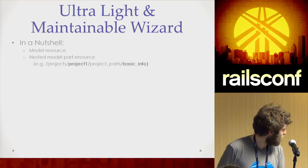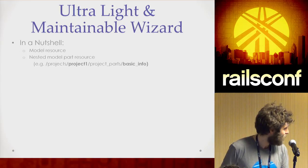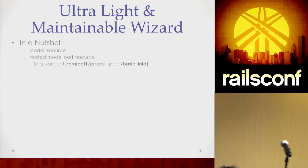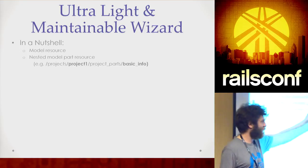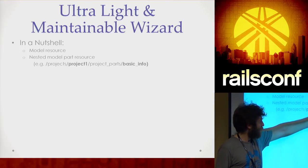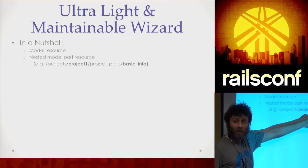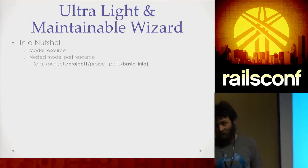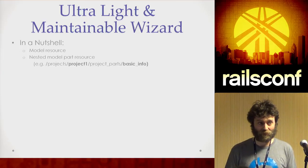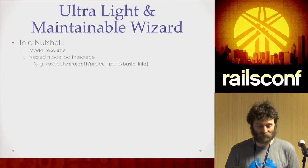You end up with URLs that are very RESTful — projects with the ID, then project parts, then the name of the step. There'll be four steps for every time you run through that wizard, so there'll be four IDs only — it's a finite set. You don't have to store it in the database. We were using FriendlyID on that project.